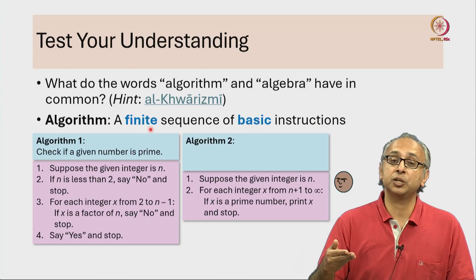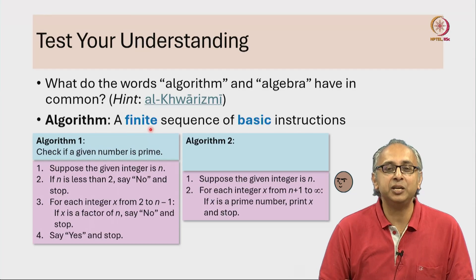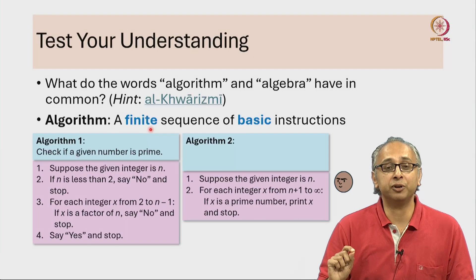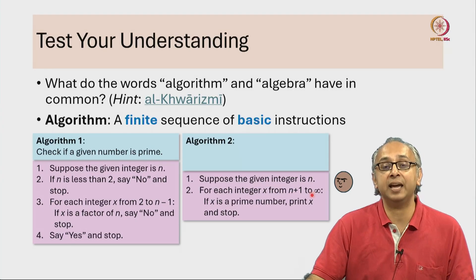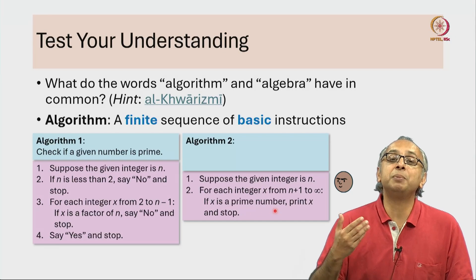This process could go on forever. But of course I am sure many of you know that this process will not go on forever. Eventually we will find an x that is a prime number. How can we be so sure?